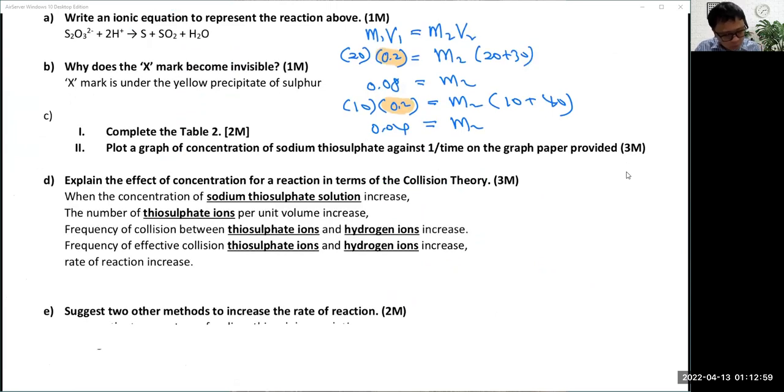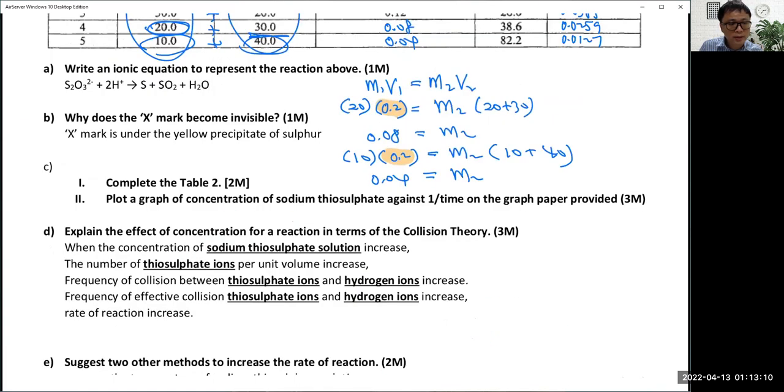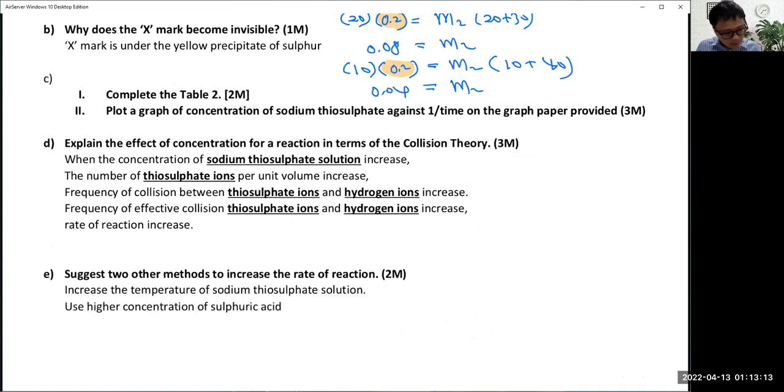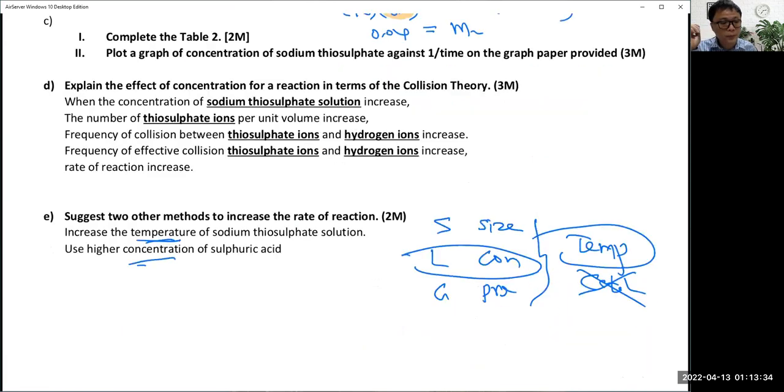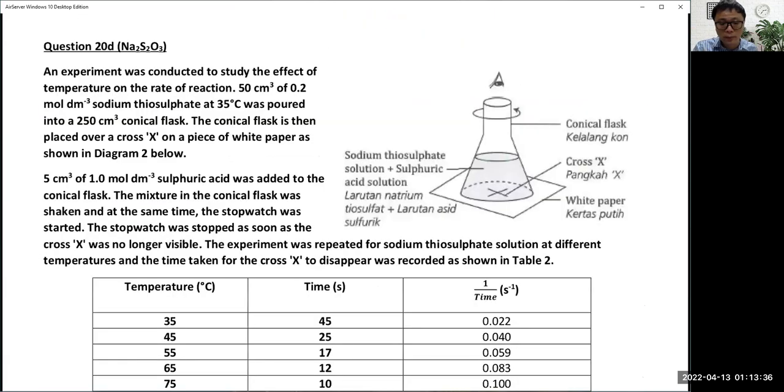Sketch the graph, then explain the effect of concentration. Higher concentration, more particle per unit volume, collision between thiosulfate ion and hydrogen is higher. Suggest two other methods to increase the rate of reaction: I can increase the temperature and concentration. For solid we can adjust the size, liquid we adjust concentration, gas we adjust pressure. All these can use temperature and catalyst, but this reaction has no catalyst, so we only can use concentration and temperature.